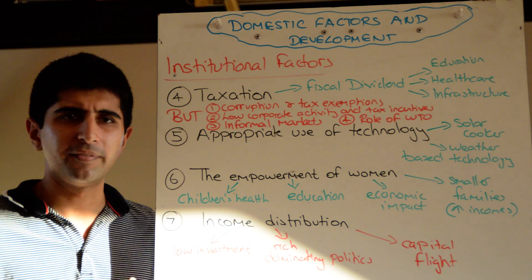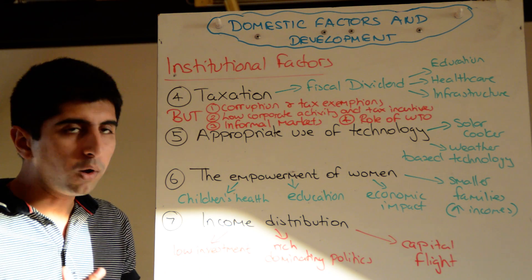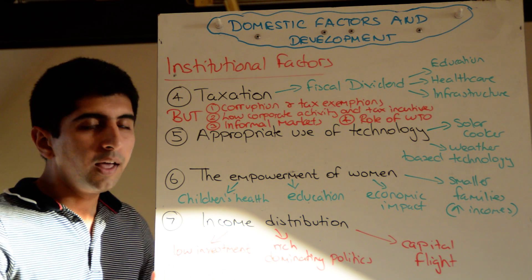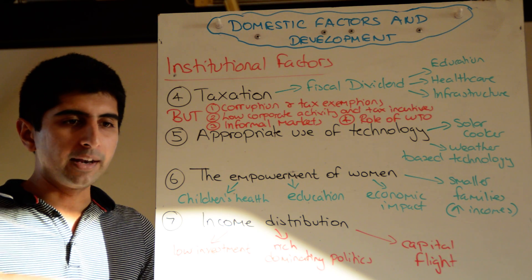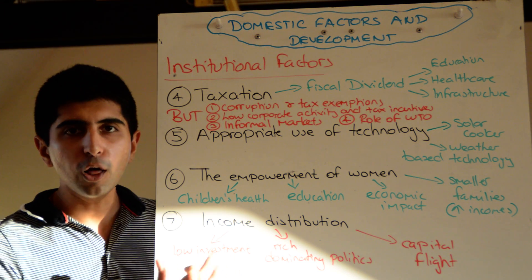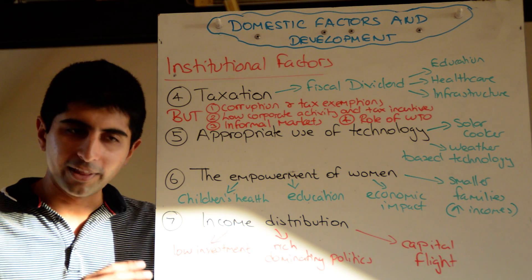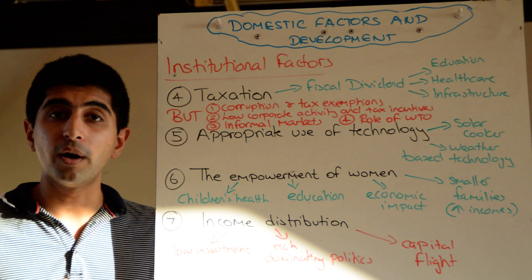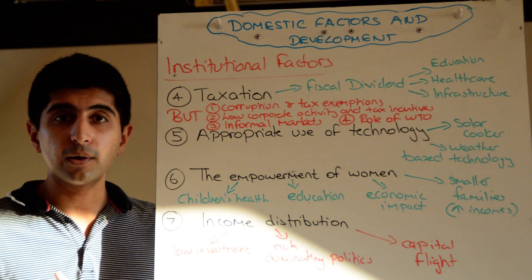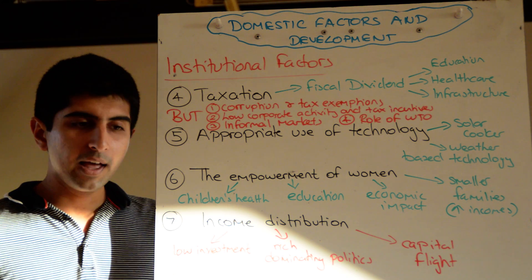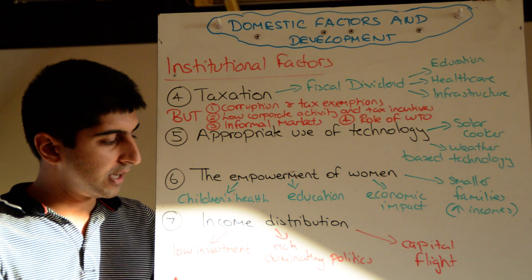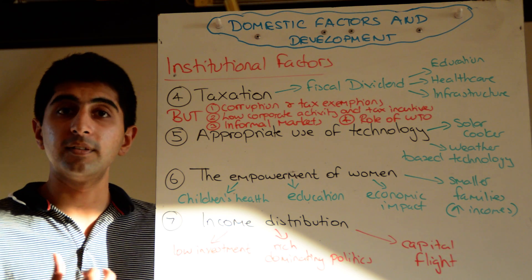Finally, unequal income distribution is a barrier to development. We want income to be distributed as evenly as possible. If only a small percent of the population earns a huge amount of income, those at the lower end will not have much income to save, and a lack of savings will promote a lack of investment. Furthermore, in developing countries, those who are rich and earn most of the money tend to be the politicians and bureaucrats. If they are the ones setting policy, they will be unwilling to set policy that suits lower-income people and will not understand the needs of the poor.